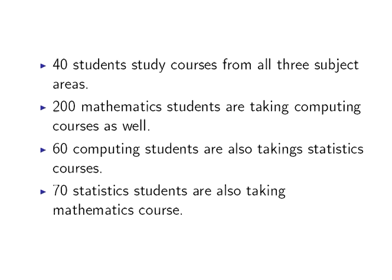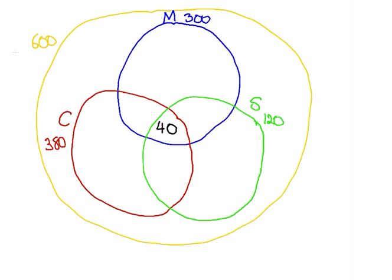200 Mathematics students are also taking Computing courses. We have 200 students studying both Mathematics and Computing courses, but we have already counted 40 who are additionally studying Statistics. So we need to determine how many are studying Maths and Computing but not Statistics — that is simply the remainder of 160. So we have 200 students in both the M and C circles, which is 160 plus 40, where that 40 are also studying Statistics subjects.